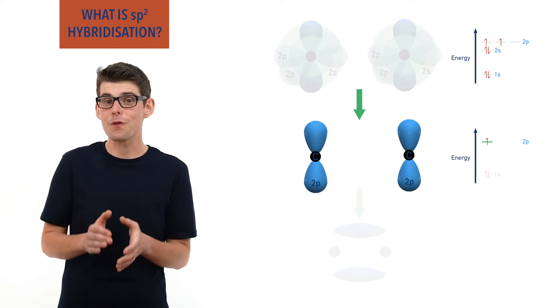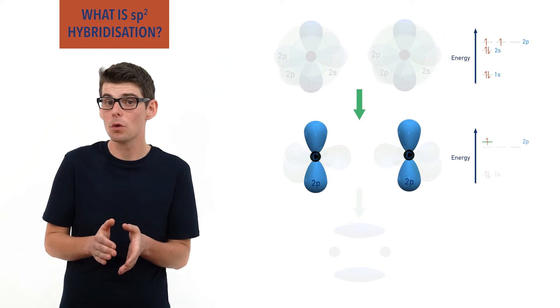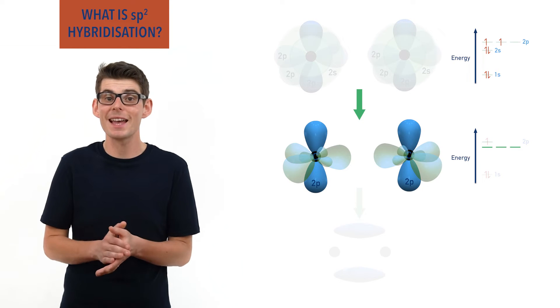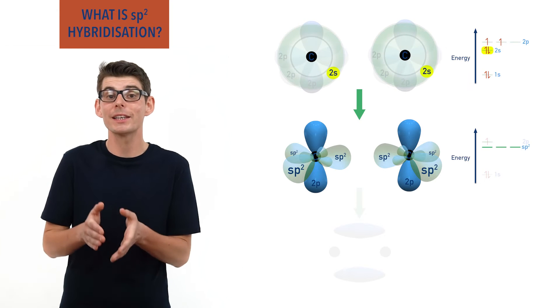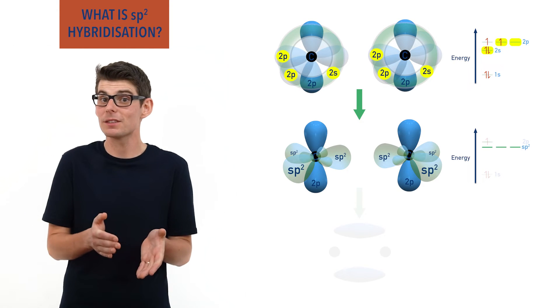This means three hybrid orbitals can form and they are referred to as sp2, as they are formed from one s orbital and two p orbitals.